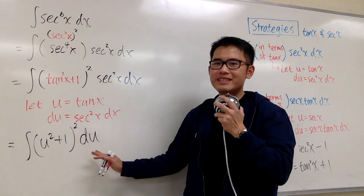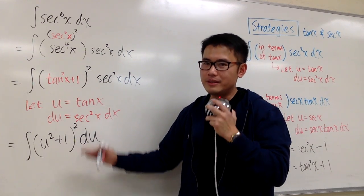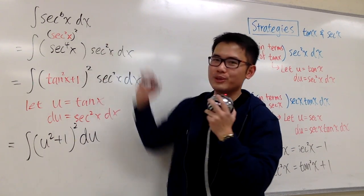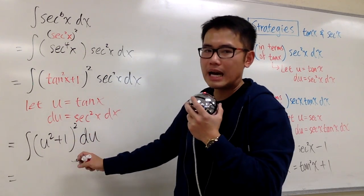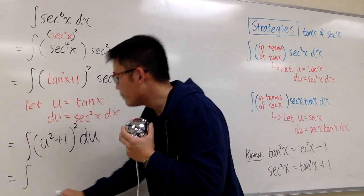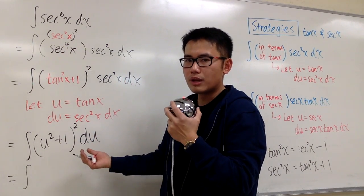And this is very easy, well at some degree, to integrate in the u world. This is much easier compared to the original. And the way to do this is, of course, we have to expand this out. We will have the integral, u square plus 1 square, we get, we can multiply this out, we can use a formula.